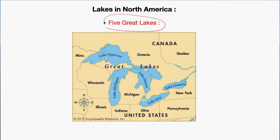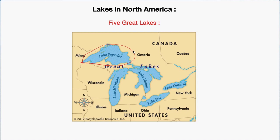These Five Great Lakes lie on the Canada and USA border. The biggest lake in this area is Lake Superior. Here you can see this is Lake Superior. Lake Superior is the largest freshwater lake in the world by surface area — and that word 'surface area' is important, rather than by volume.